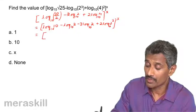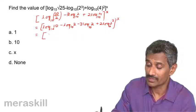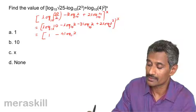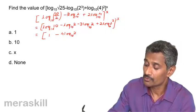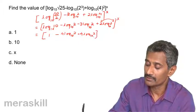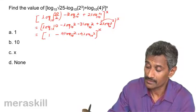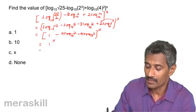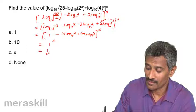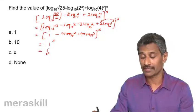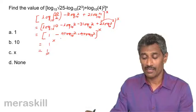This turns out to be log 10 to the base 10, which is 1, minus 4·log 2 to the base 10, plus 4·log 2 to the base 10, the whole raised to x. The log 2 terms cancel, giving us 1 raised to x, which is 1. All the terms cancel and what we are left with is log 10 to the base 10, which is 1 raised to x, giving us 1.